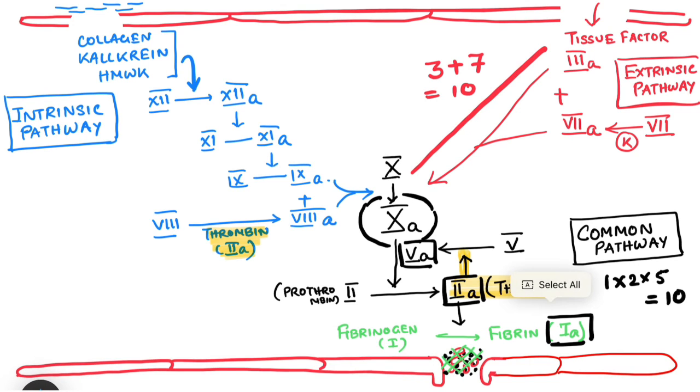Now, comes our intrinsic pathway. Again in intrinsic pathway, we will again draw a line. And we will write down the numbers 12, 11, 9, and 8. After 10 comes 9, 11, and 12. And why 8? 8 was the left out number which was not used in the common pathway as well as in the extrinsic pathway. So, we will have 8, 9, 11, and 12.